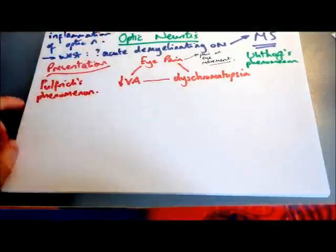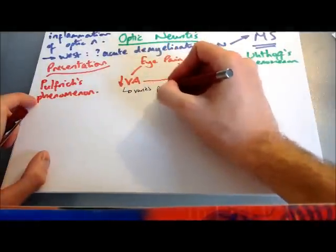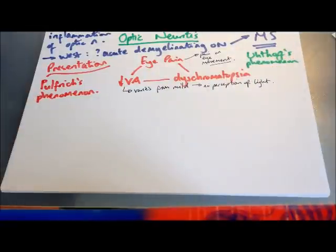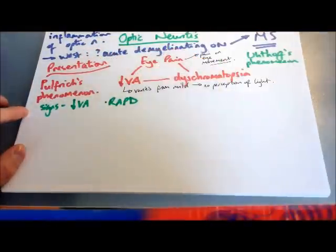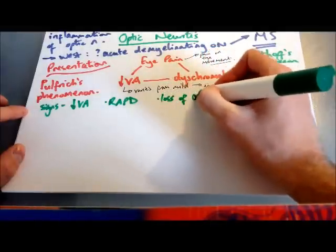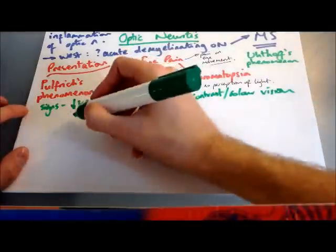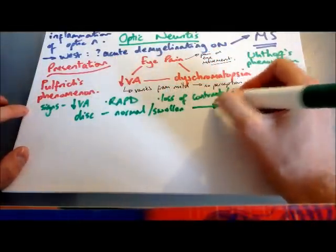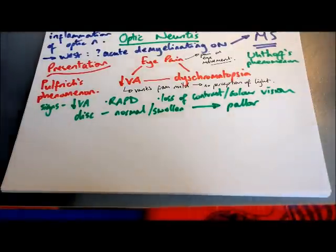The visual acuity loss can vary from mild blurring of vision all the way up to no perception of light and total blindness in that eye. There are a number of signs associated with optic neuritis: a reduction in visual acuity which can vary in severity, a relative afferent pupillary defect because the optic nerve has been affected, loss of contrast or colour vision which will be out of proportion to the visual loss (that's the dyschromatopsia). When you look at the optic disc, it may be normal or it can become swollen. And weeks after the presentation, there will be pallor of the optic disc.